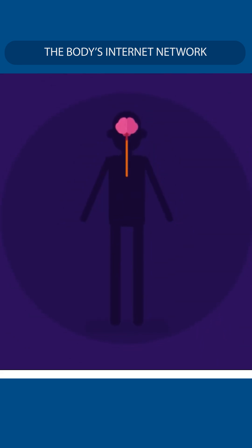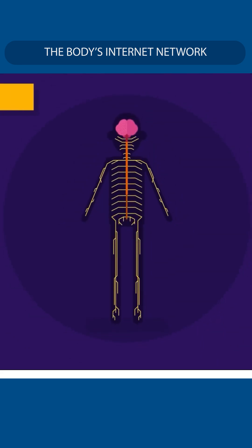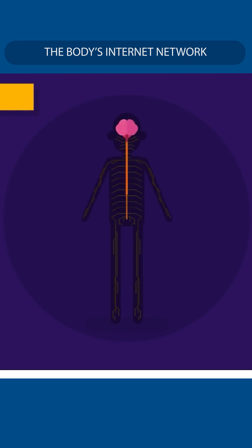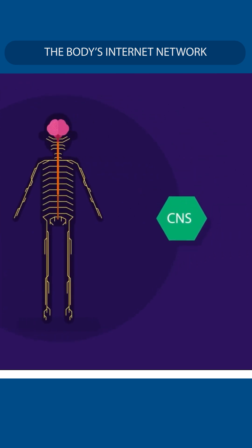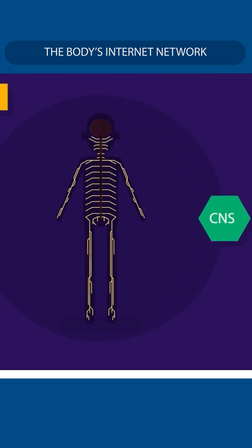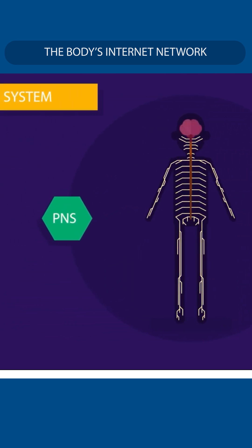The brain comes under a system called the nervous system. Structurally, the nervous system is classified into two types: the central nervous system (CNS) and the peripheral nervous system (PNS).